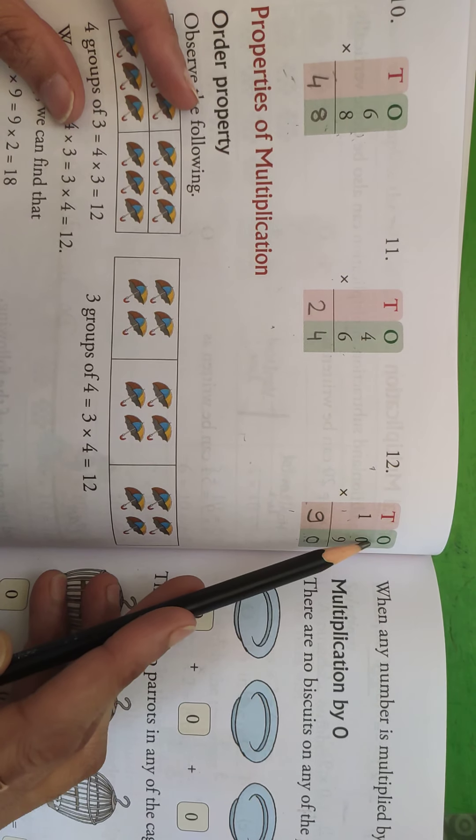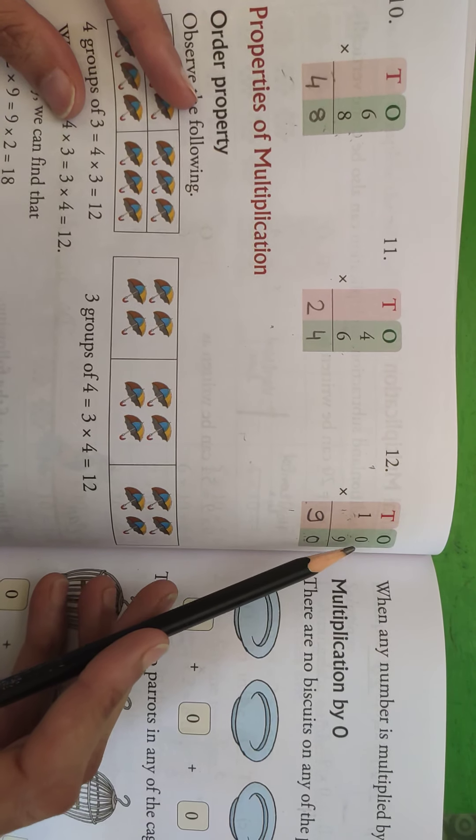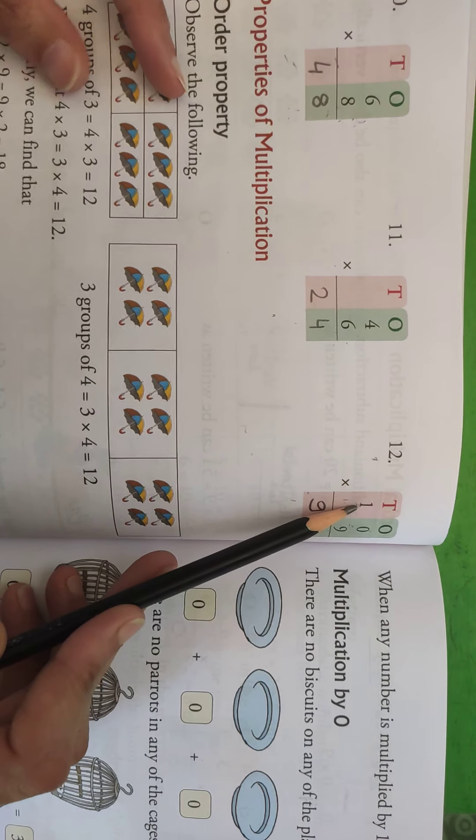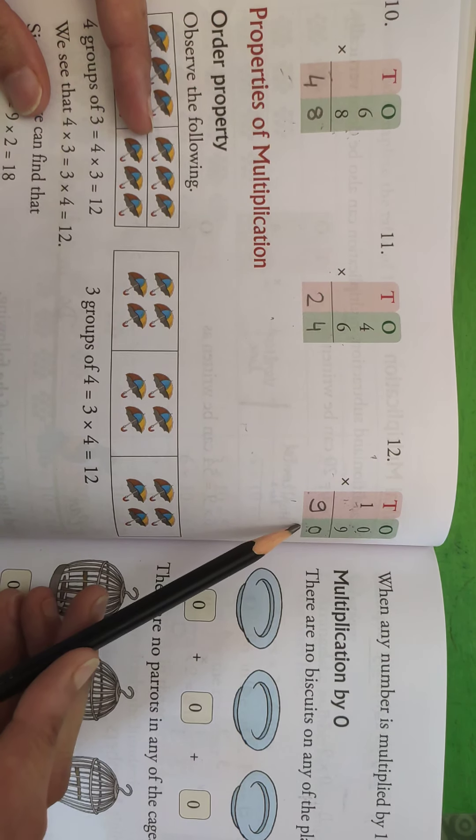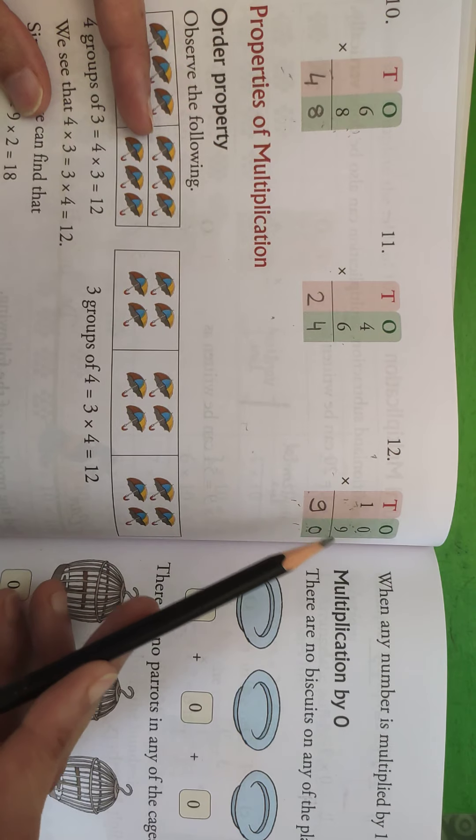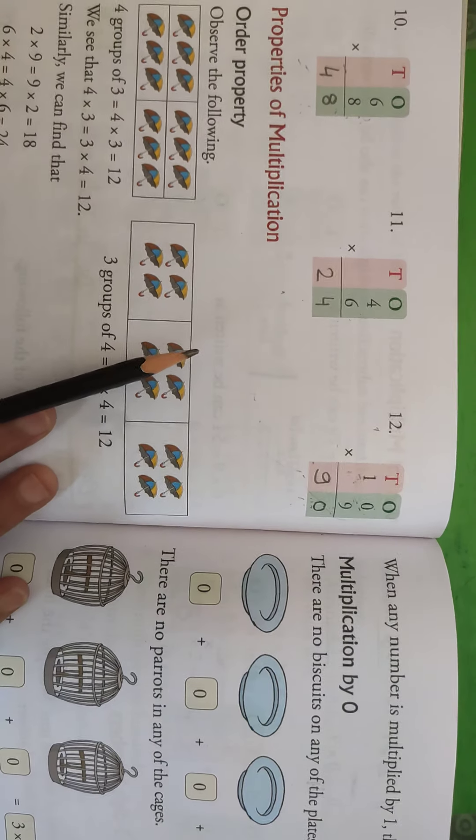Okay, then 12th one. Tens and ones, so again, you can do it. See, 2 numbers are there, 1 0, so we can read as, 10 multiplied by 9. So 9 0s a 0, 9 1s a 9. Or we can say, 9 10s a 90. Both the method we can use.